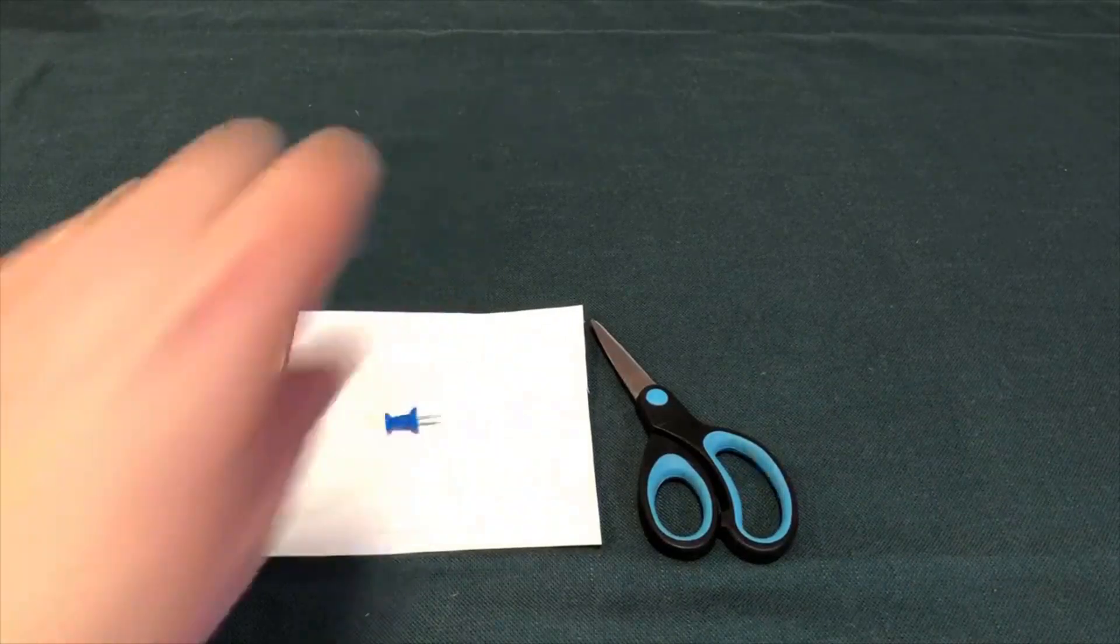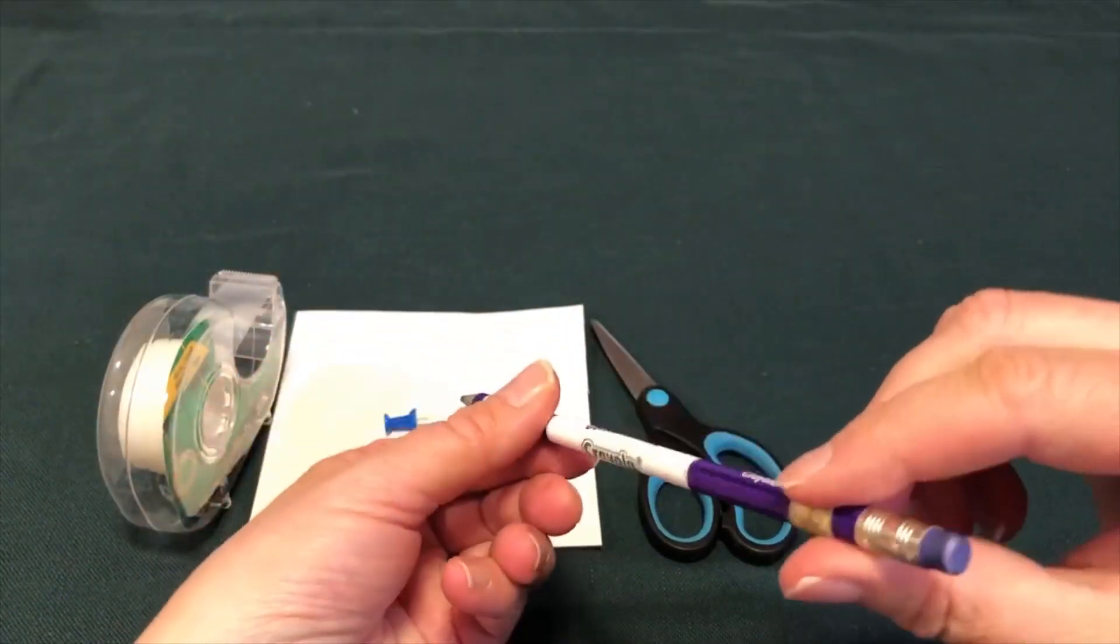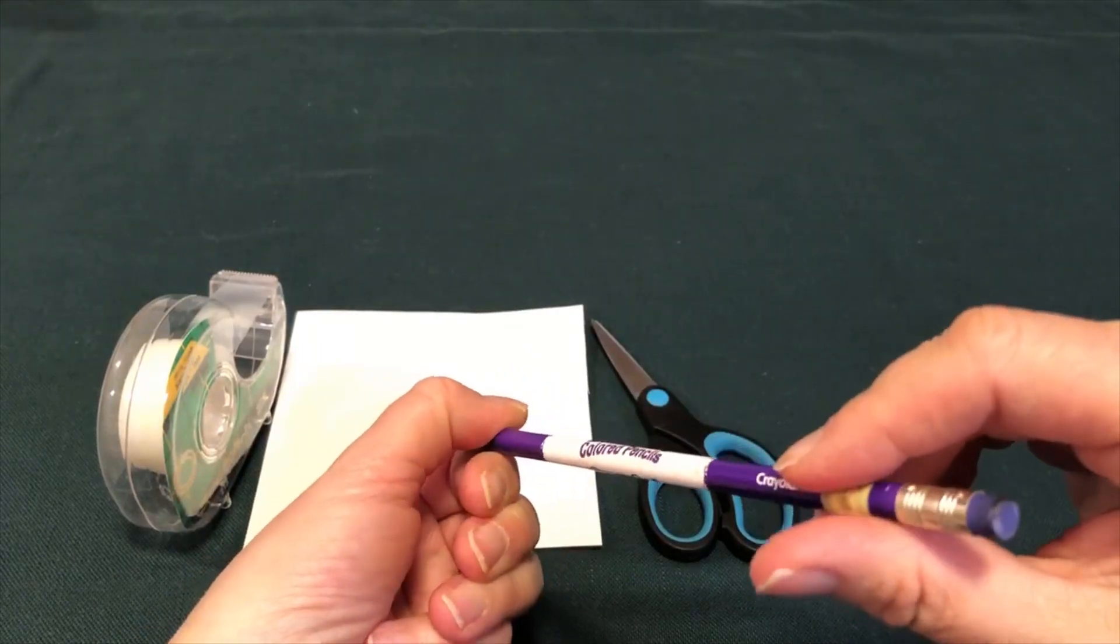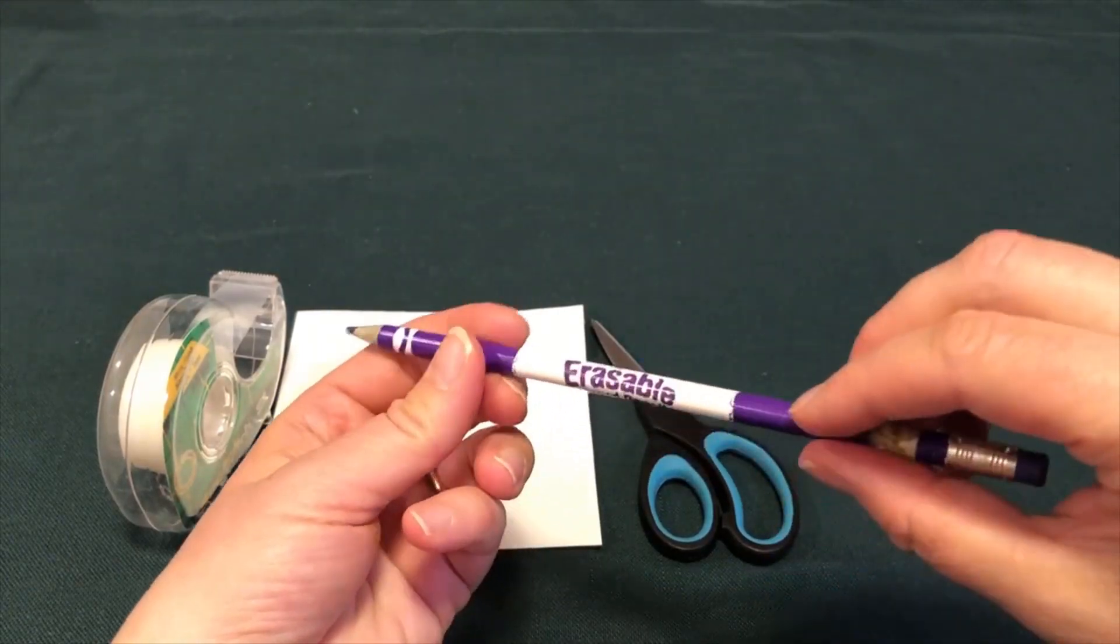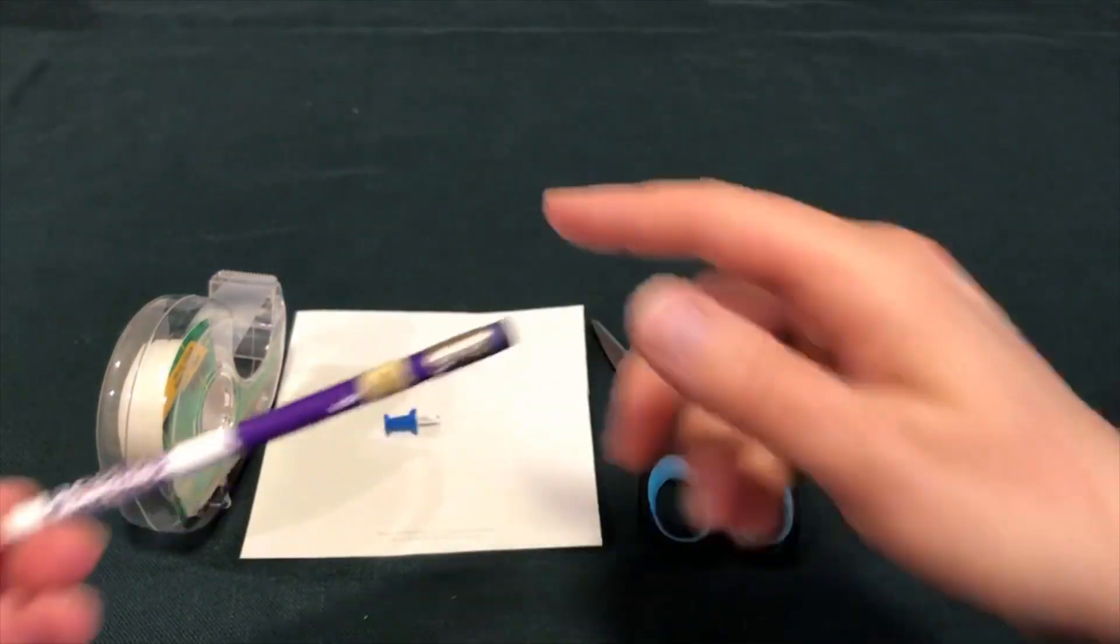A pushpin, a pencil with an eraser. And here a round pencil will probably work better than a flat sided pencil because a round pencil will spin better. But the most important thing is that it has an eraser on the end.